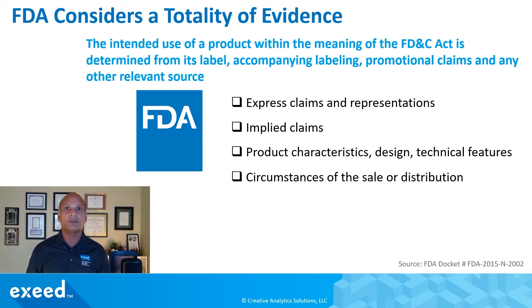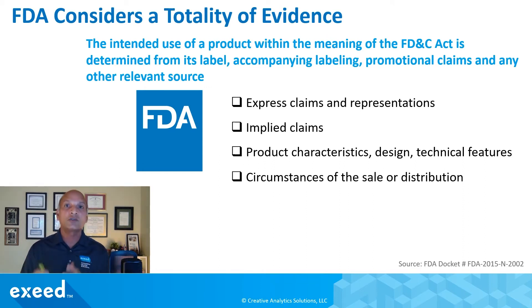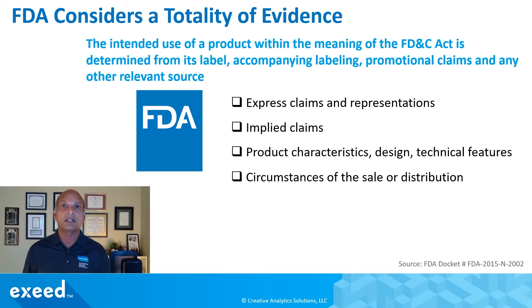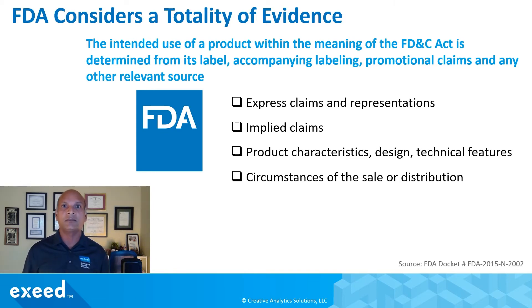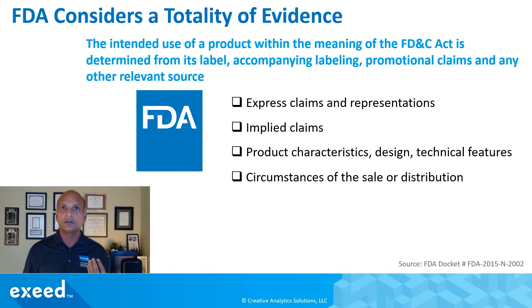Circumstances of sale and distribution also matter. Even if you are not explicitly promoting a product for off-label use, providing large quantities of free product to physicians you know are likely to prescribe it off-label would be considered evidence of intent. FDA will look at a variety of factors to determine if your intent diverges from your claimed intended use — and that's a regulatory issue we won't go deeper into in this video.